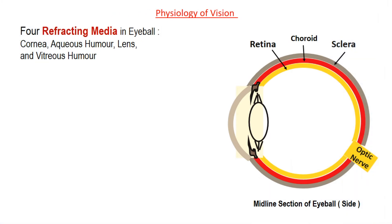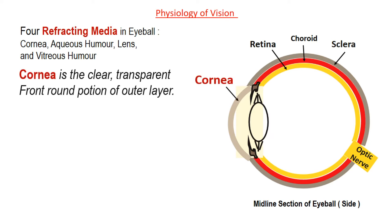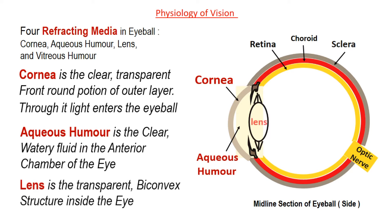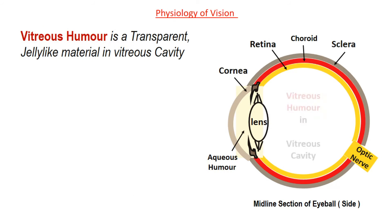Look at a midline section of eyeball from the side. There are four refracting media in the eyeball, one after another: cornea, aqueous humor, lens, and vitreous humor. Cornea is the clear, transparent front round portion of the outer layer. It is one of the refracting media and through it light enters the eyeball. Aqueous humor is the clear, watery fluid in the anterior chamber of the eye. Lens is the transparent, biconvex structure inside the eye — it also works as the autofocus system of the eye. Vitreous humor is a transparent jelly-like material in the vitreous cavity, the large space inside.